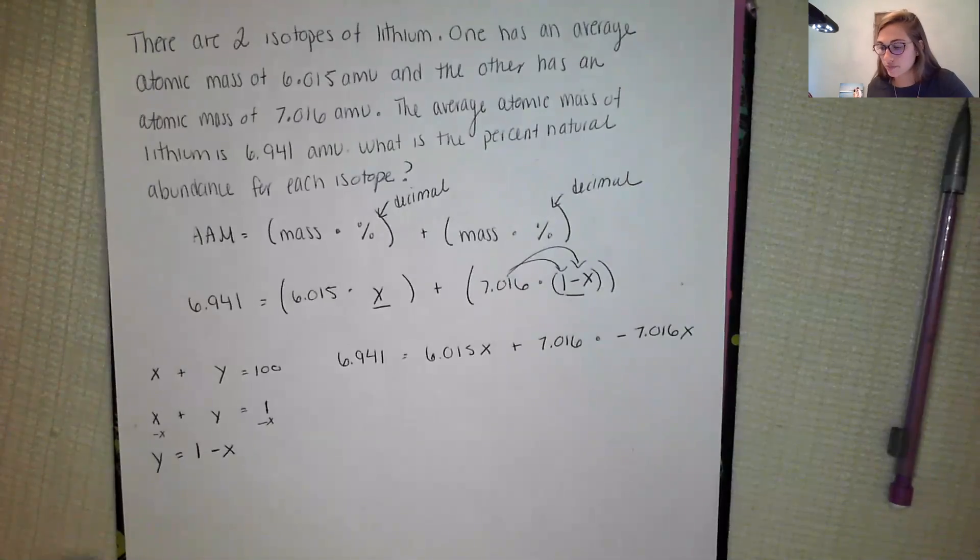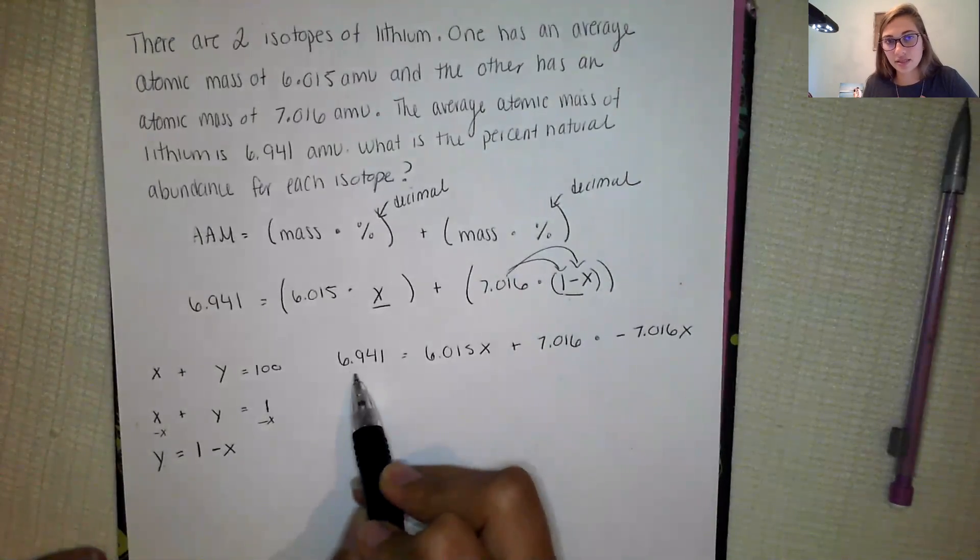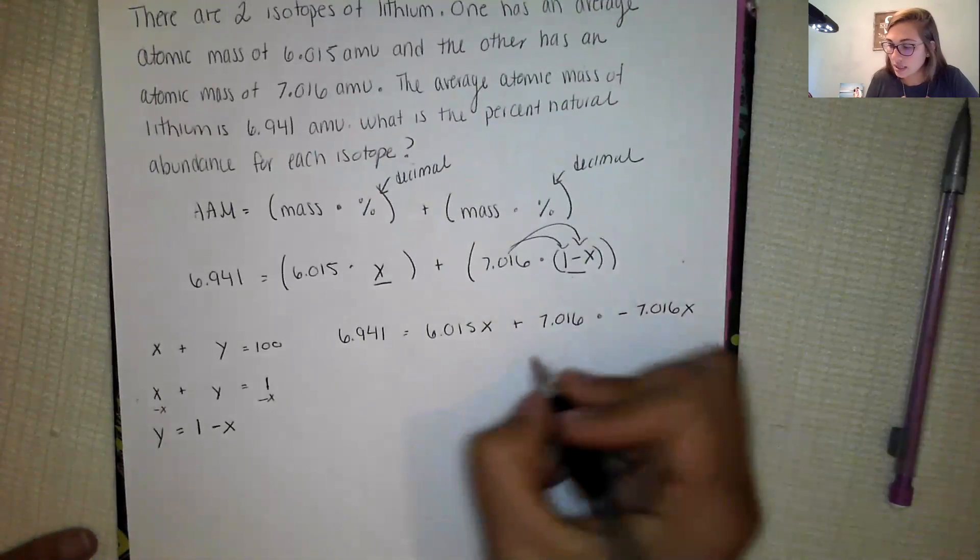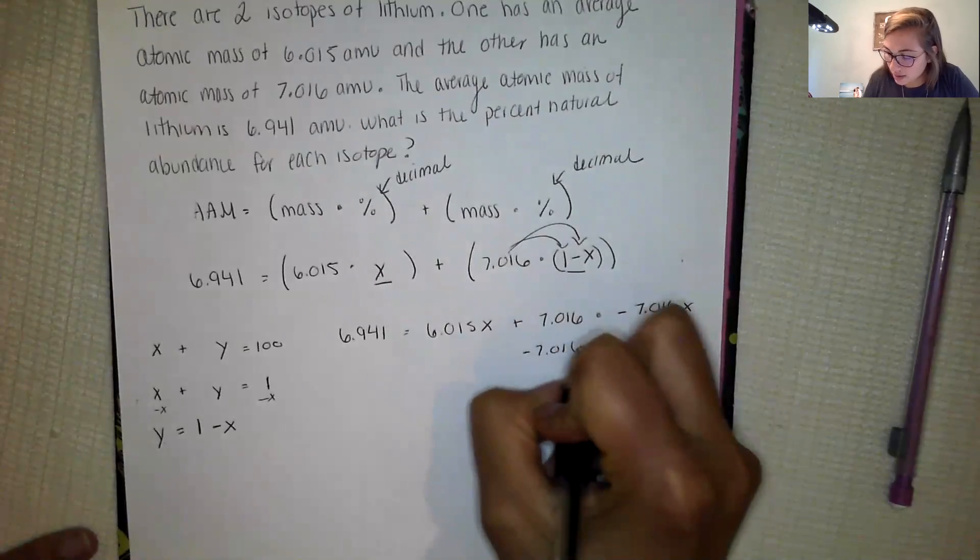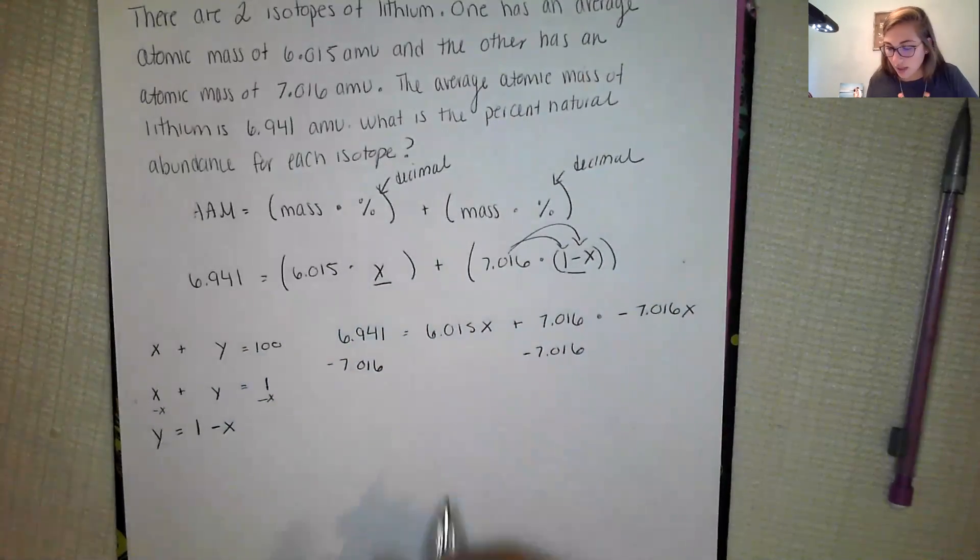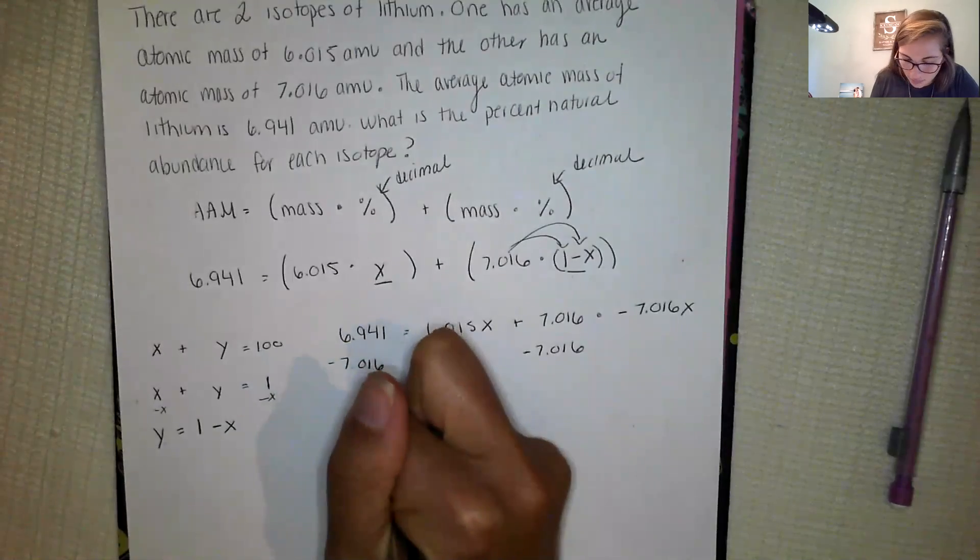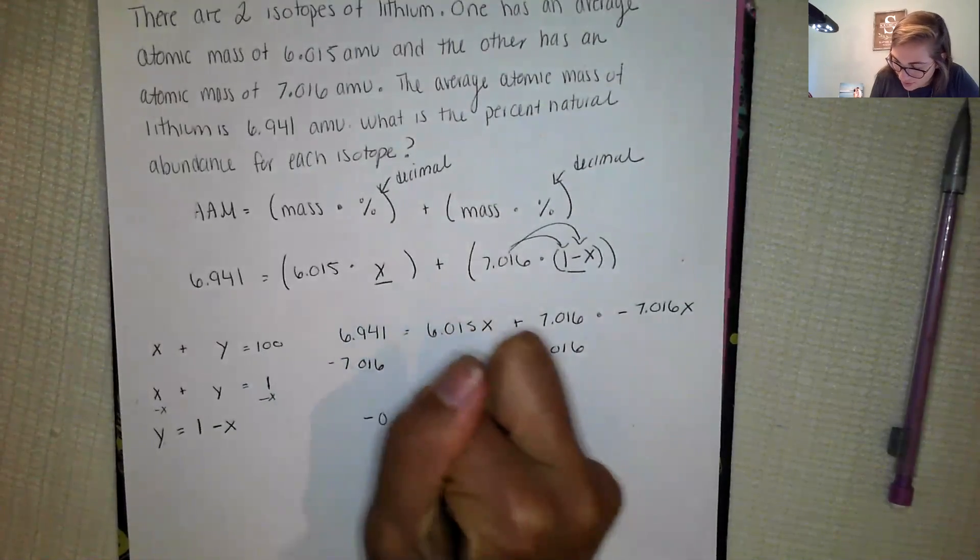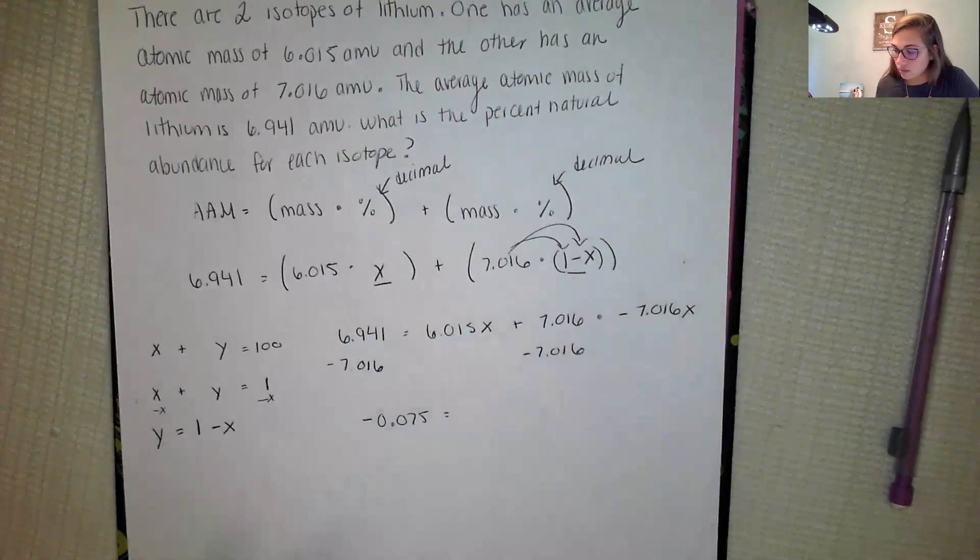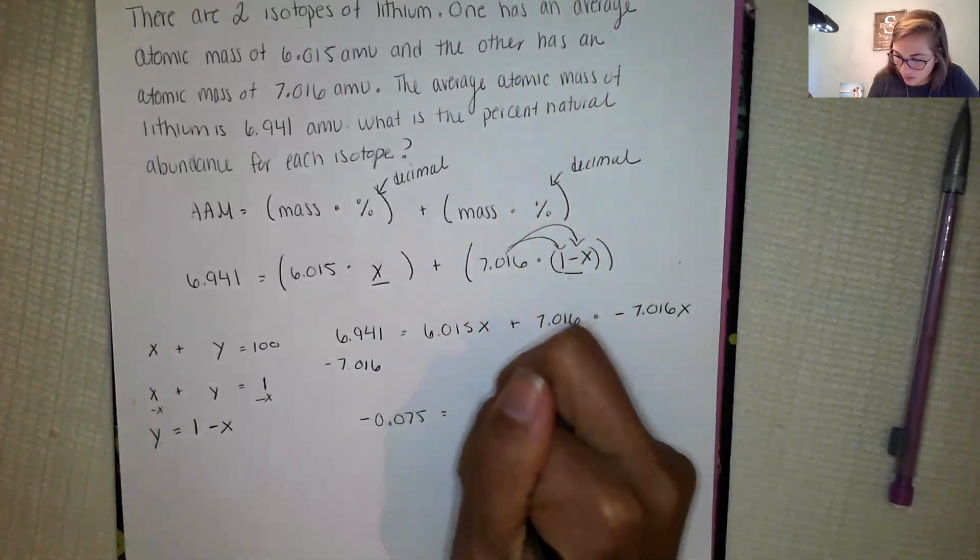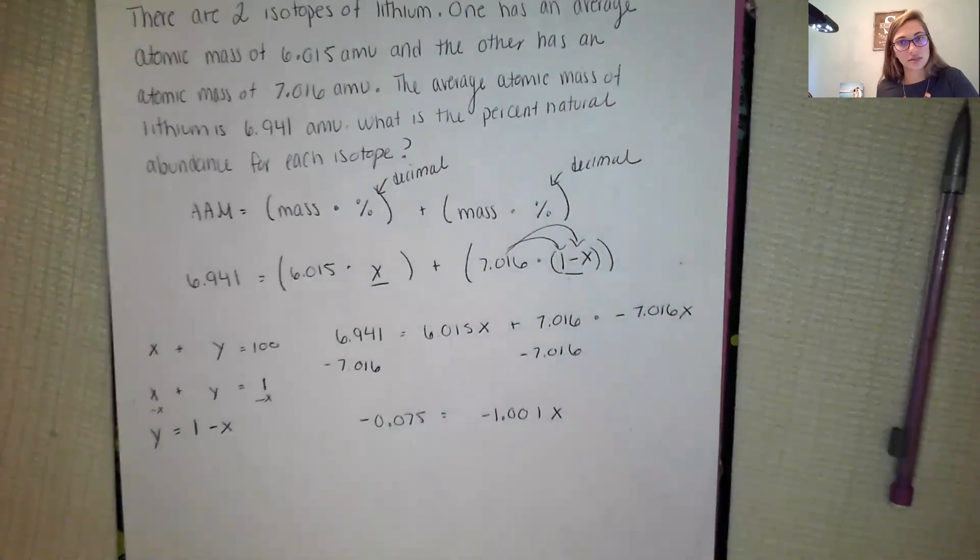Now I have to combine like terms so I'm going to get all of my non-X's, just my constants, over to the left side and combine all of my X's on the right side. So when I do that, 6.941 minus 7.016 gets negative 0.075, and then I want to combine these two, so 6.015 minus 7.016 that comes out to negative 1.001X.